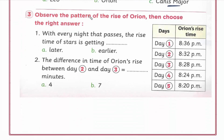Last question: Observe the pattern of the rise of Orion then choose the right answer. هنشوف الباترن of the rise of Orion constellation. Day one: Orion rises at 8:36. Day two: 8:32. Day three: 8:28. Day four: 8:24. Day five: 8:20. كل يوم بتظهر بدري عن اليوم اللي قبله بـ 4 دقايق.